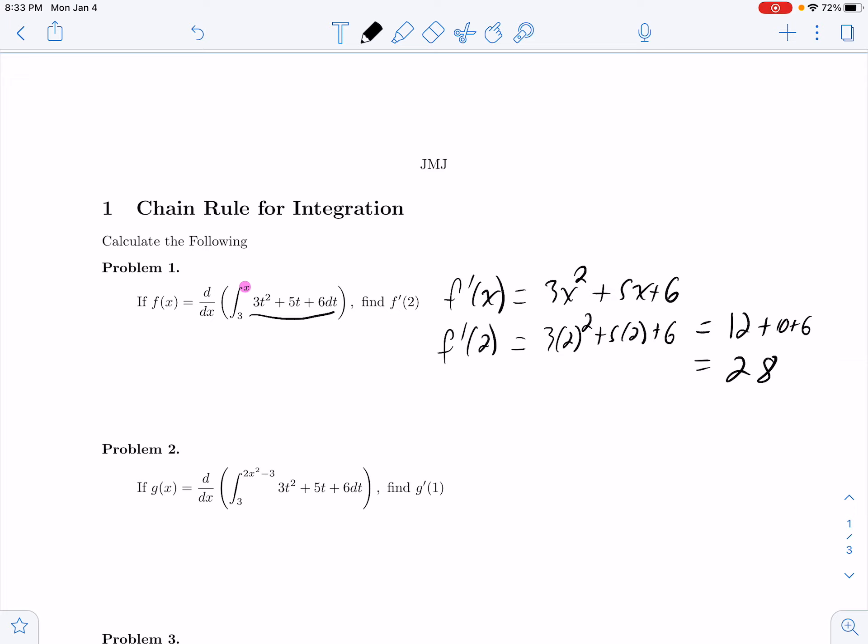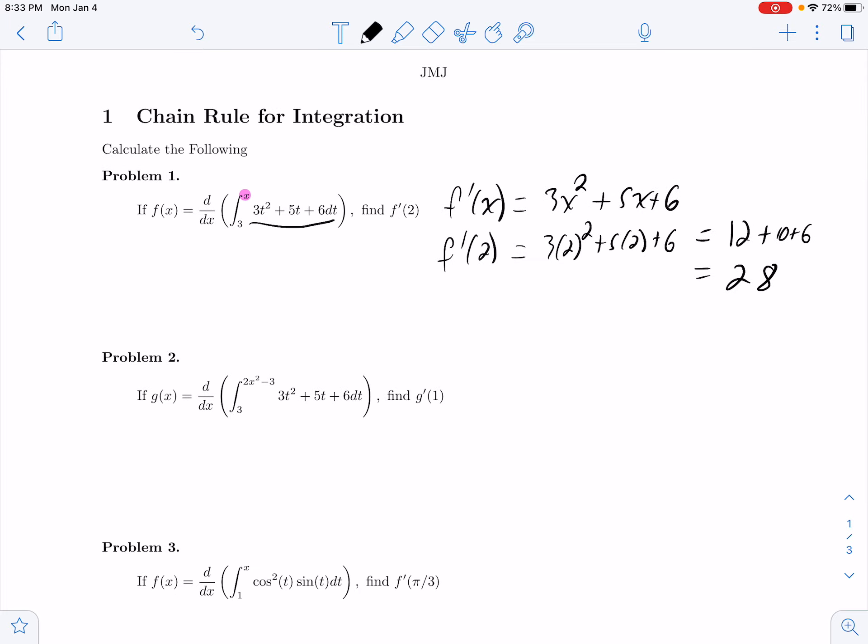All right, and then if we have a function up there, we flip it. We have to use the chain rule, so I want to do g prime of x.